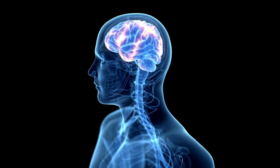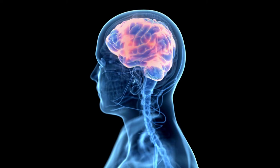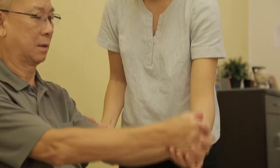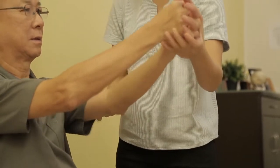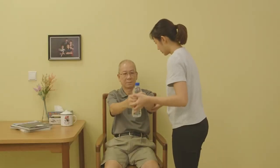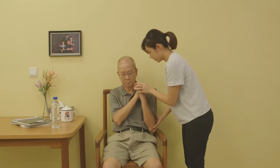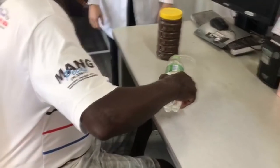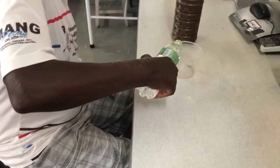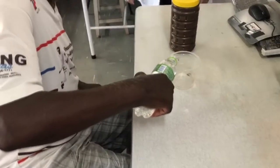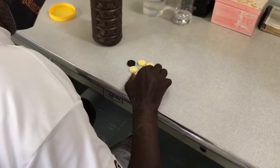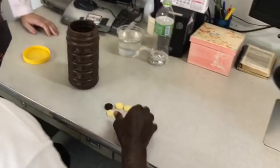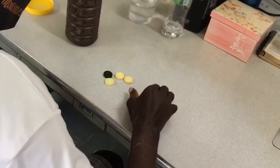Stroke is a syndrome caused by a disturbance in the blood circulation of the brain which compromises its function. It is the second leading cause of death in the world and occurs predominantly in middle-aged and elderly adults. There were more than 25 million stroke survivors worldwide and this population is predicted to reach 70 million by 2030. Generally after a stroke, people need to deal with various consequences such as motor, sensory, or cognitive changes.